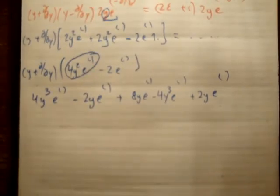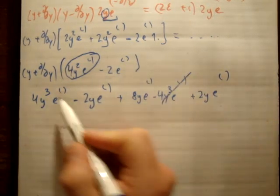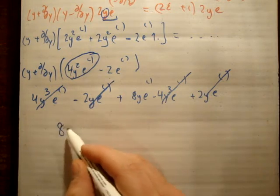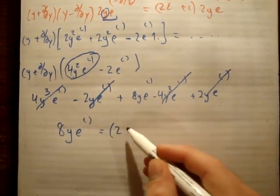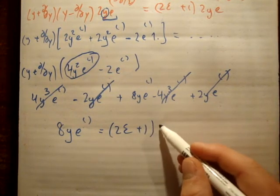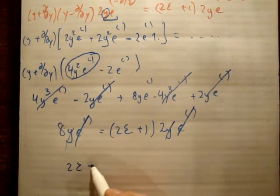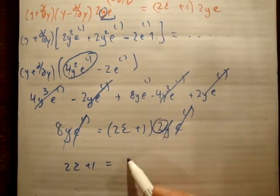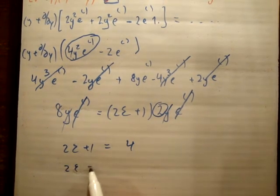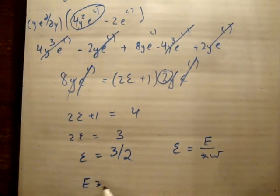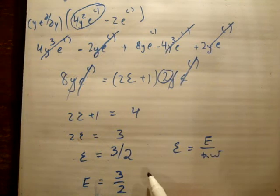After cancellation: the y³ terms cancel, and the y terms give 8ye^(-y²/2). This equals (2ε + 1)·2y·e^(-y²/2). Cancelling the exponentials and y, we get 8 = 2(2ε + 1), so 4 = 2ε + 1, giving 2ε = 3, thus ε = 3/2. Since ε = E/(ℏω), we get E = 3/2 ℏω.